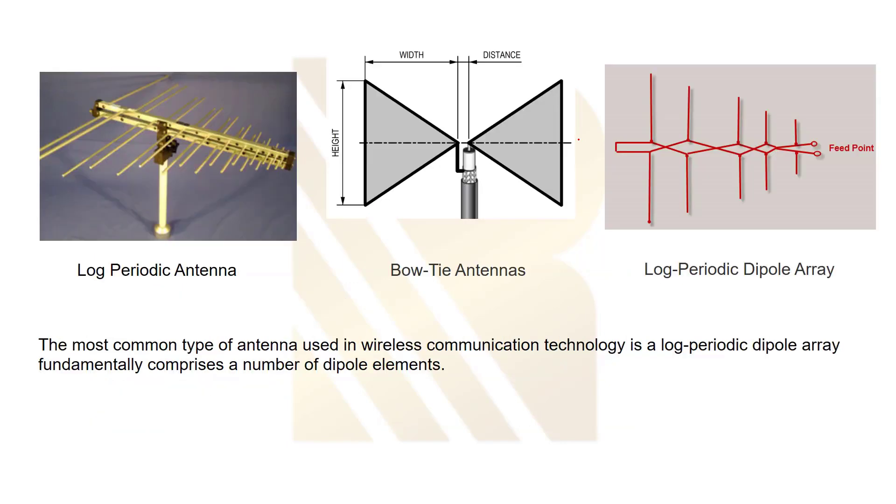We have different kinds like log periodic antenna, bow tie antenna, and dipole array. The most common type used in wireless communication technology is log periodic dipole array. You can see this kind of structures in TV stations. We call them log periodic because they have array of metals with special relationship and formulas. This is kind of off topic, we are not going to explain this in details.